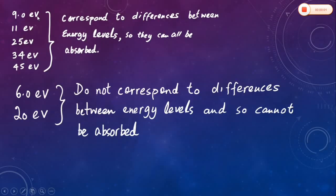So by looking at the diagram, you can see that 9 eV, 11 eV, 25 eV, 34 eV, and 45 eV from the given list correspond to differences between energy levels, so they can all be absorbed. Whereas 6 eV and 20 eV do not correspond to differences between energy levels and so cannot be absorbed.